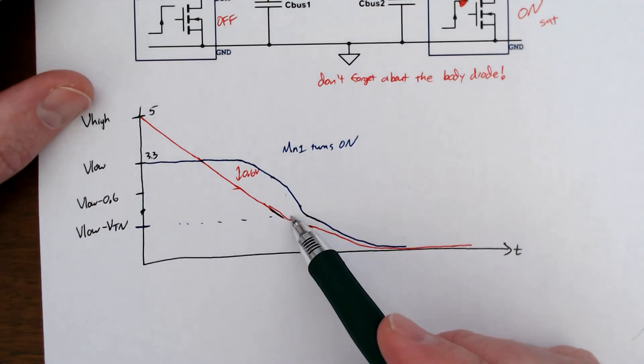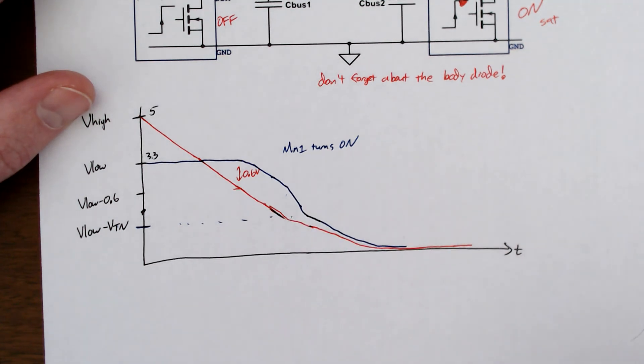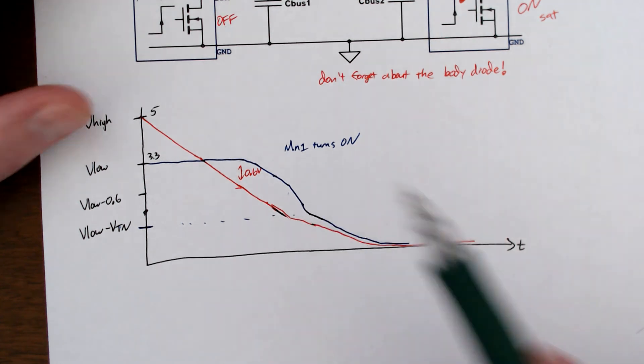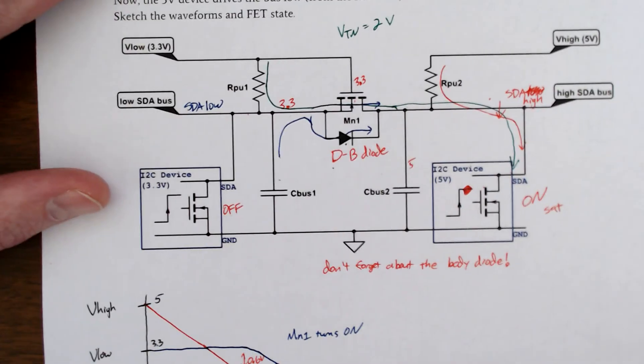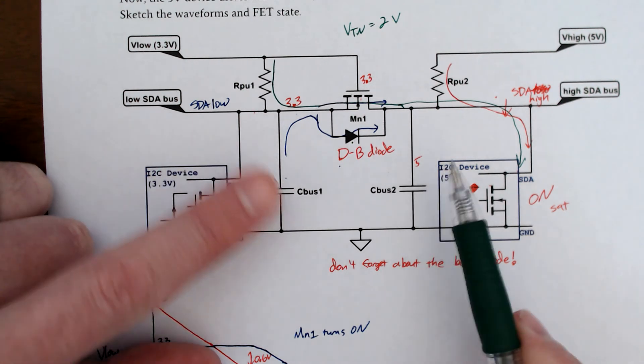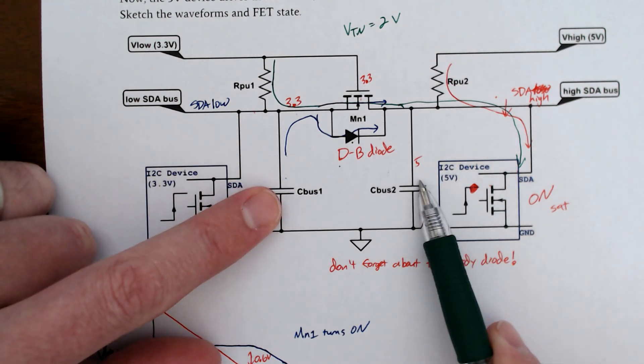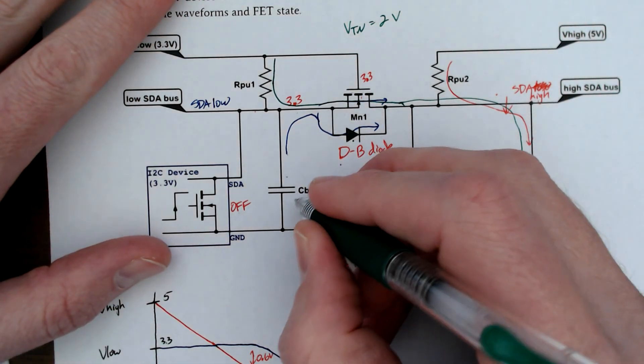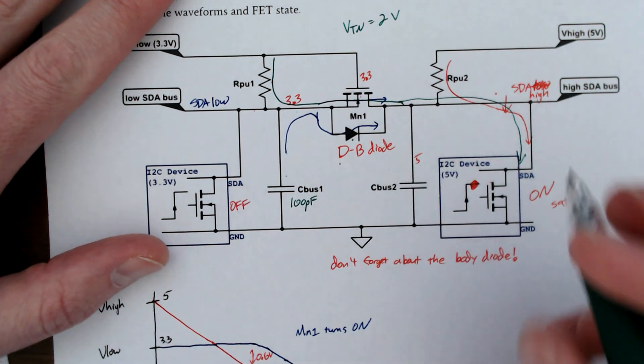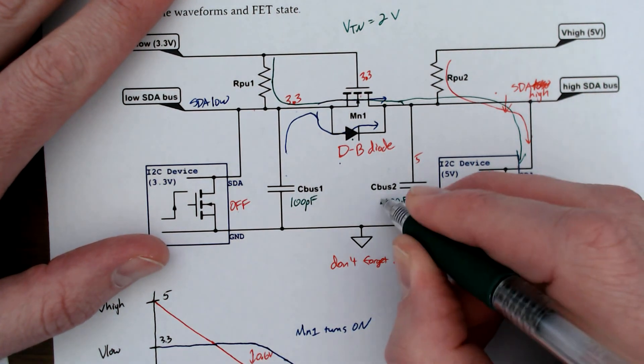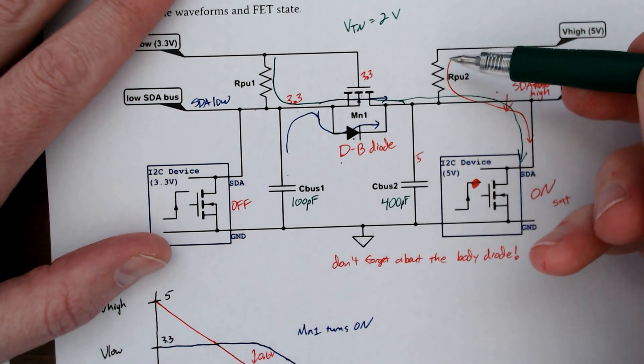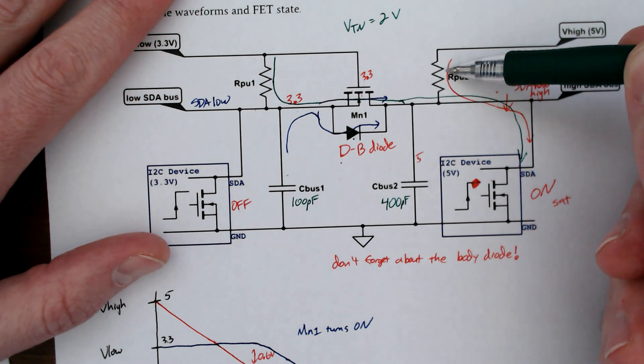These are the waveforms that you would expect to see. And indeed, if you simulate it, you see shapes that look like this. It helps when you're simulating this to make these capacitors to be large value instead of the 100 picofarads or so that would be here. I think the specification says like 400 picot. But really, this is a time constant thing and informs what your rise time is with this RC time constant.